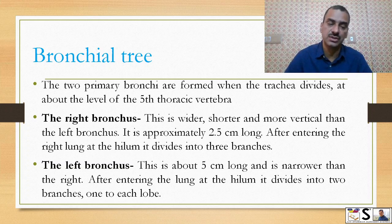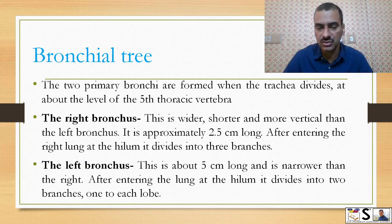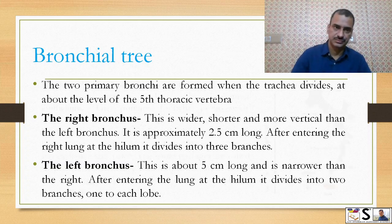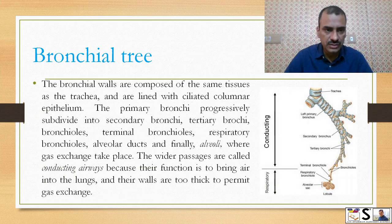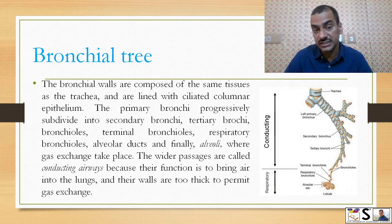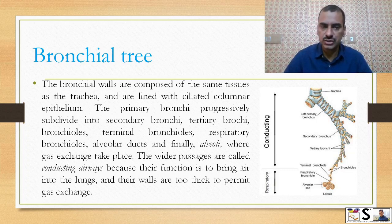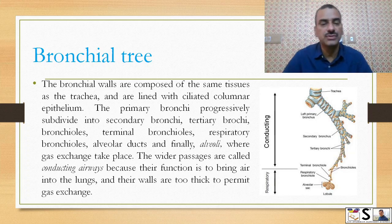At this level the divisions are known as secondary bronchi. The bronchial walls are composed of the same tissue as the trachea and are lined with ciliated columnar epithelium. The primary bronchi progressively subdivide into secondary bronchi for the lobes, then tertiary bronchi.